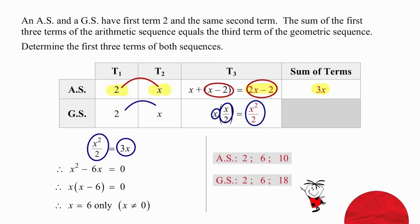When we solve that equation, we get two solutions: x equals 6 or x equals 0. We are rejecting x equal to 0 because 0 cannot be a term in a geometric sequence as it will give us an undefined ratio.